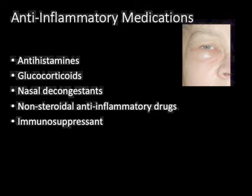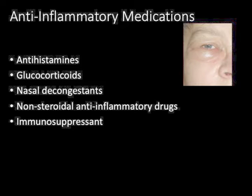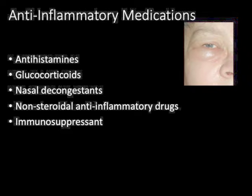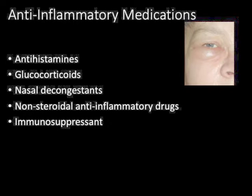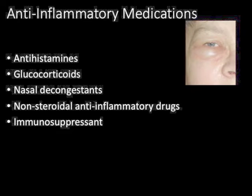Immunosuppressants suppress the immune response. Corticosteroids are one class of these drugs. Immunosuppressants like azathioprine work differently by disrupting the synthesis of DNA and RNA and cell division. They're used for long-term therapy of inflammatory diseases or as anti-rejection therapy for transplant patients. If at all possible, immunosuppressants are used alternatively with other therapies to prevent vulnerability to infection and certain cancers caused by long-term suppression of the immune system.